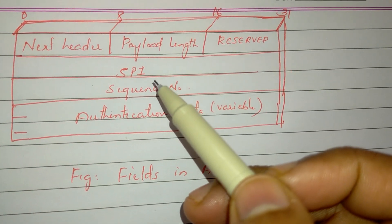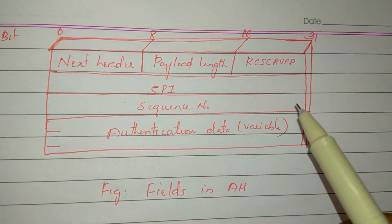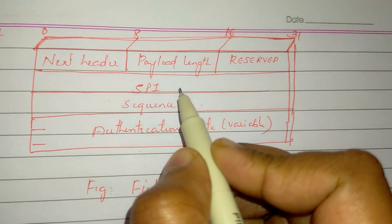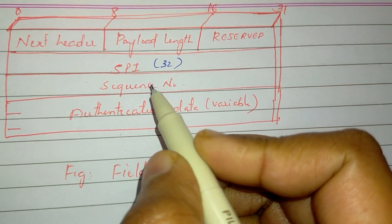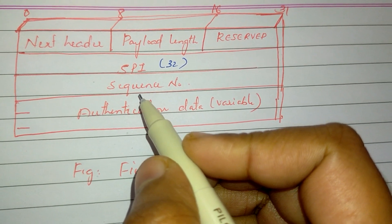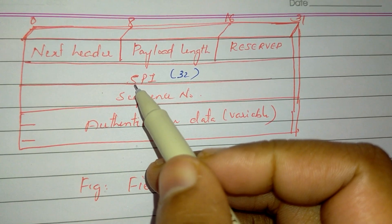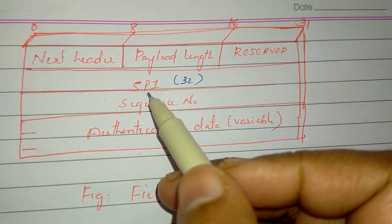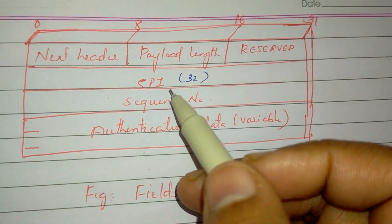Then the security parameter index. The security parameter index is 32-bit. It identifies the security association. We will learn about the security association in the IP security introduction part. The security parameter index identifies the security association.